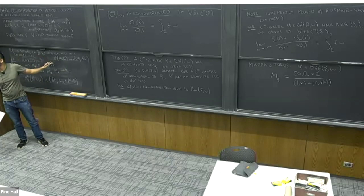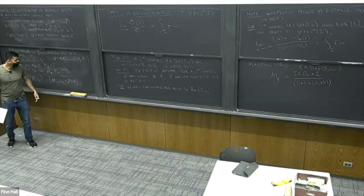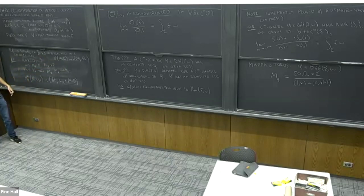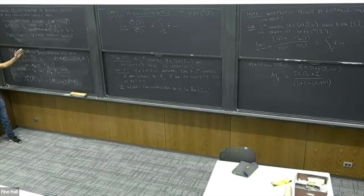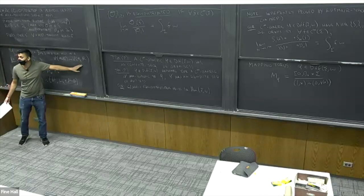On the other hand, what this tells you is, for example, if the surface is S^2, then any map is rational because the cohomology will have rank at most one. But really any area-preserving map of S^2 is Hamiltonian, so it's somewhat moot.